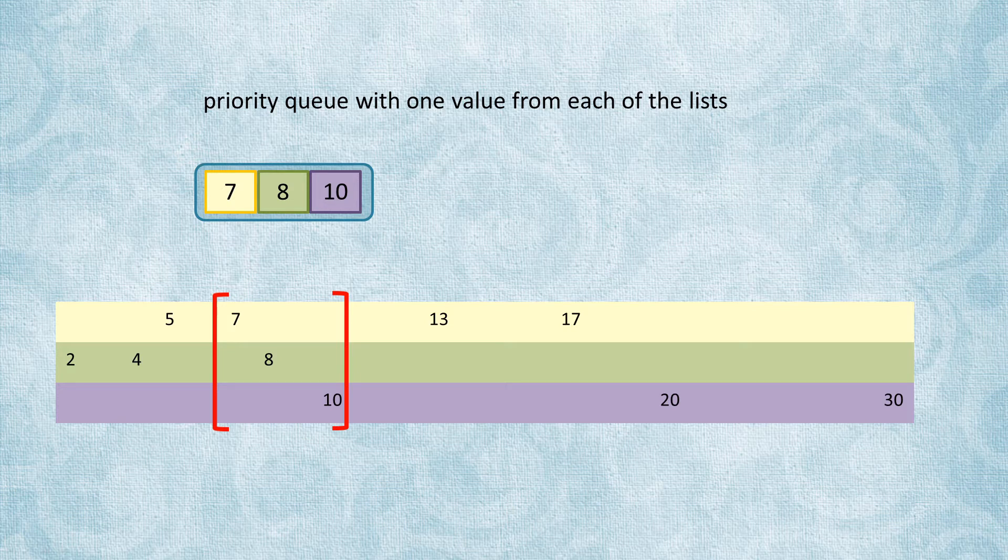We can keep track of the maximum number in the queue in a temporary variable and keep updating it as new values are put in.